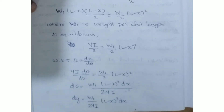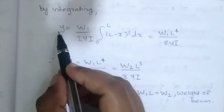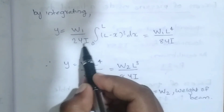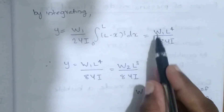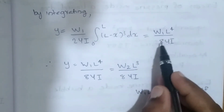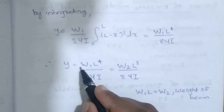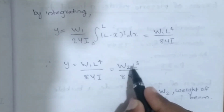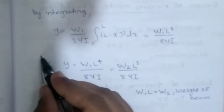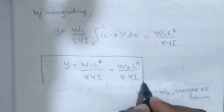Integrating, y equals w1 divided by 2YI, integral from 0 to L of (L minus x) cubed dx, which gives w1 L to the power 4 divided by 8YI. Therefore, y equals w1 L to the power 4 divided by 8YI, which is also equal to wL cubed by 8YI. This is the depression for a cantilever loaded uniformly.